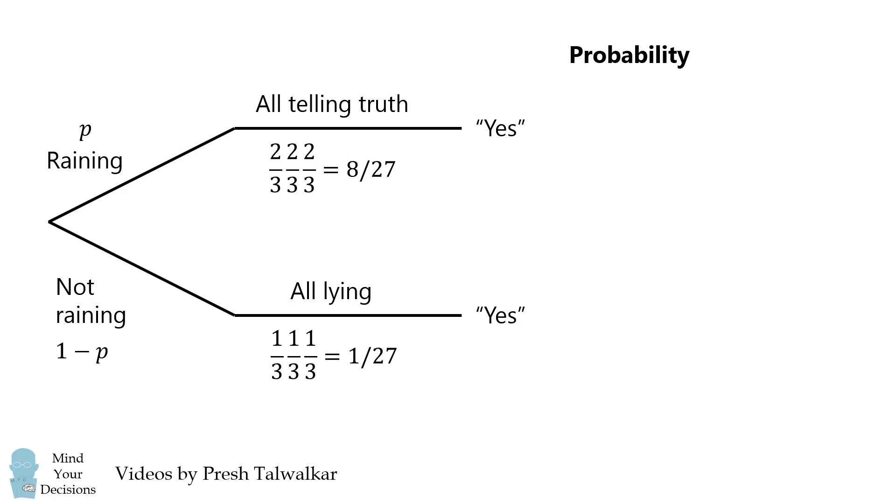We can now calculate the probability of each branch by multiplying the respective probabilities. The top branch will be 8P/27, and the bottom branch will be (1-P)/27.